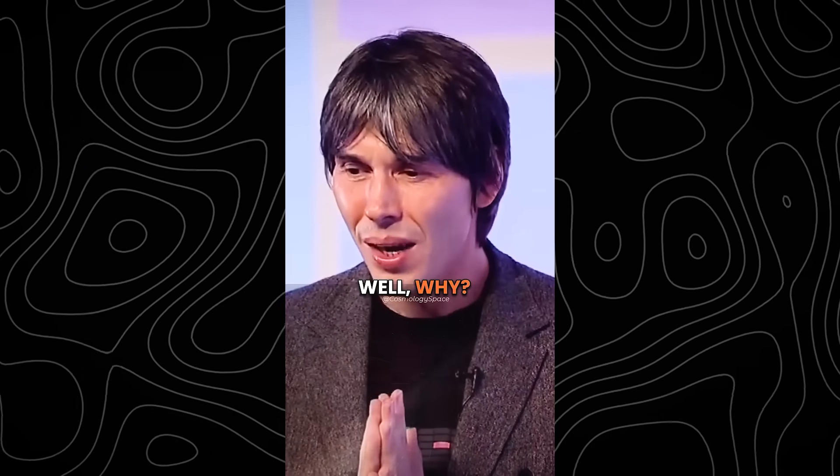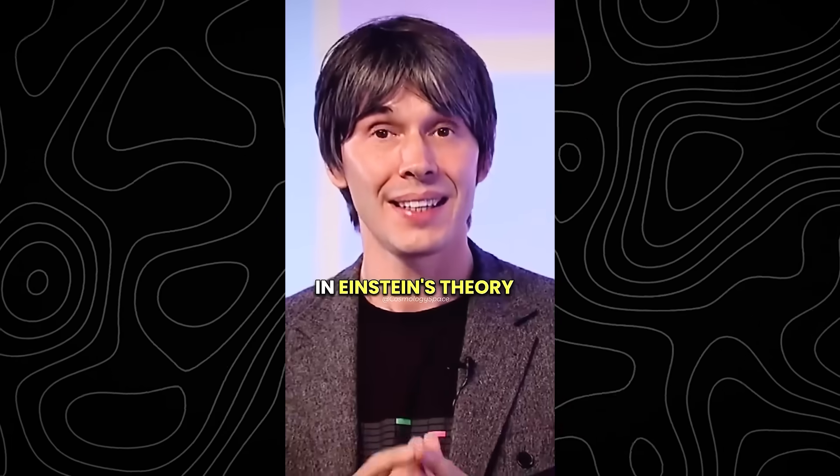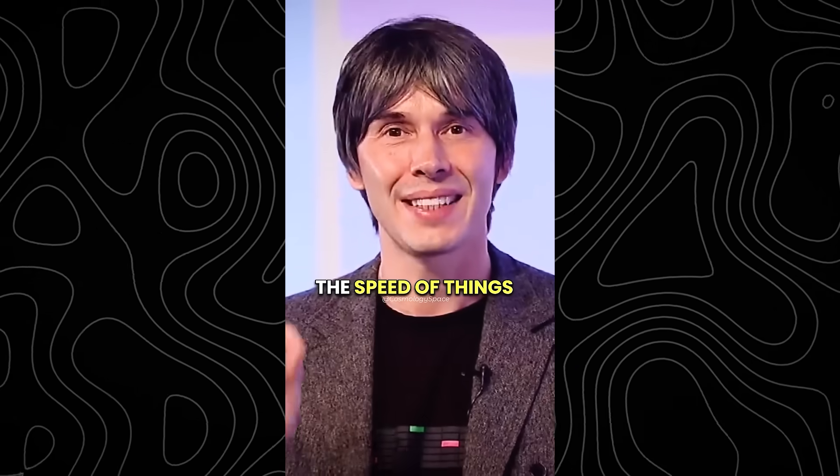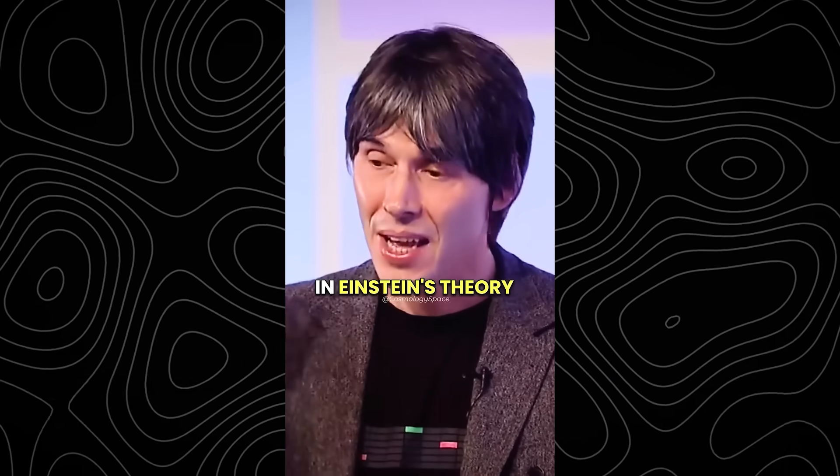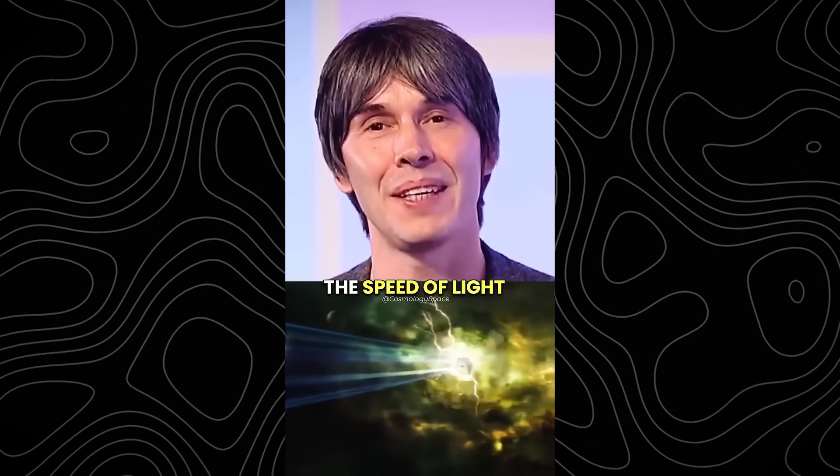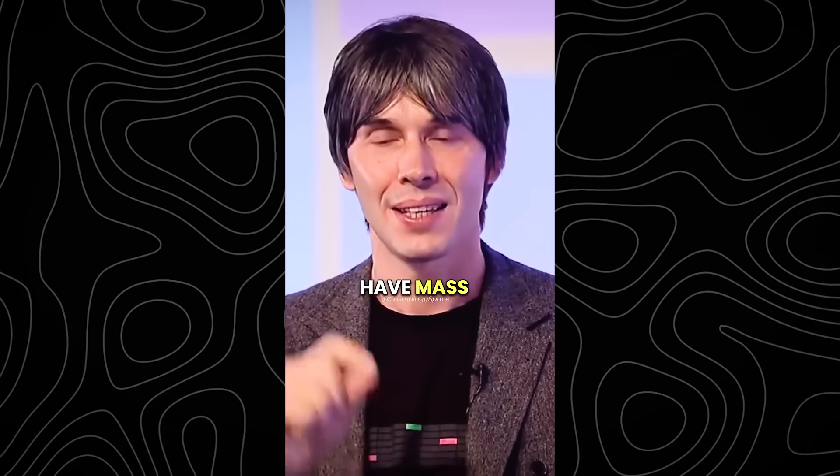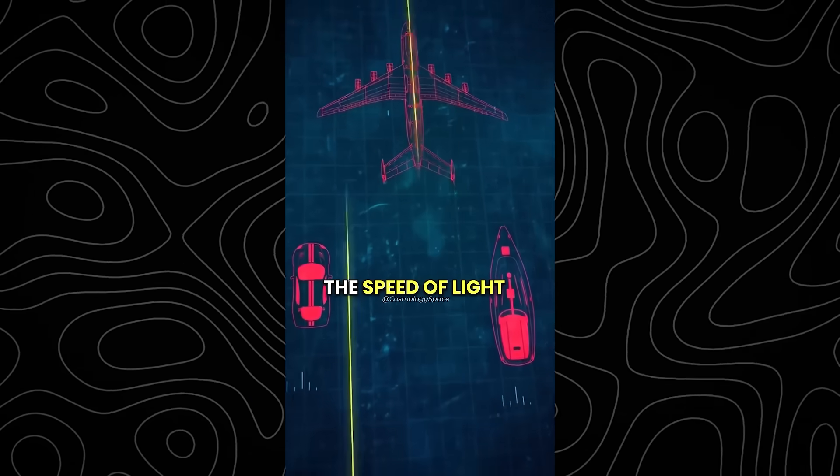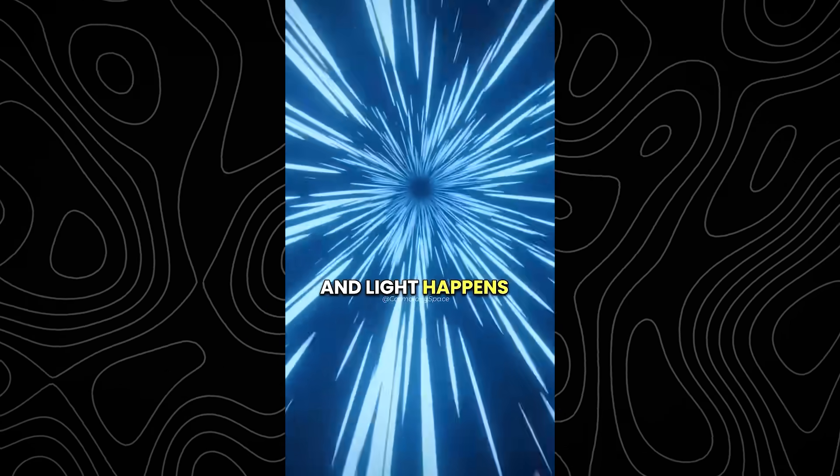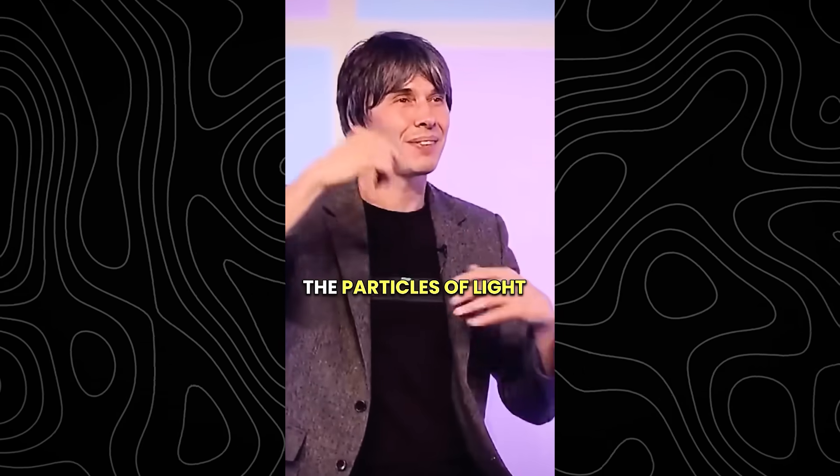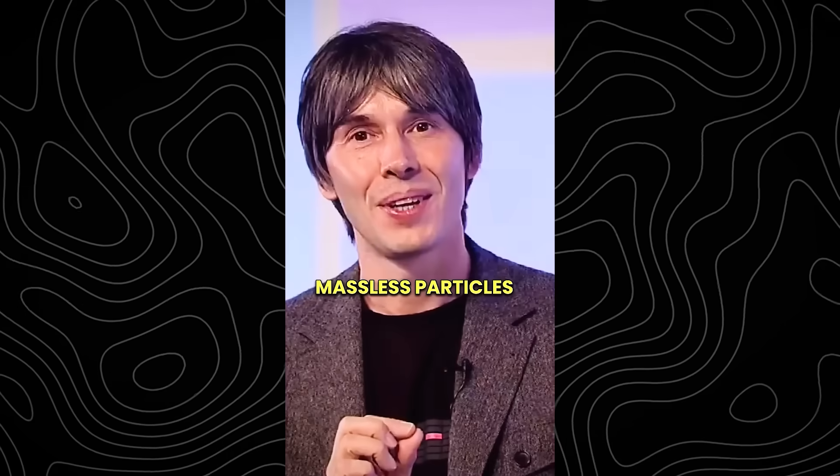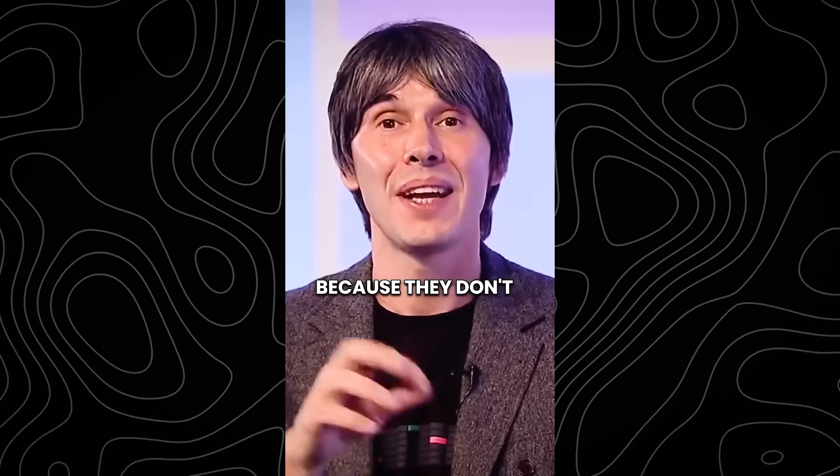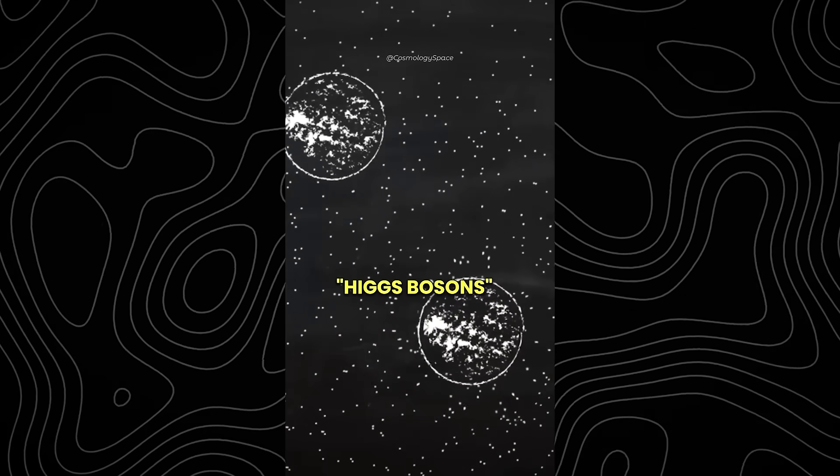People often ask me, why? What's special about light? In Einstein's theory, it's not really the speed of light. It's the speed of things that have no mass. So if you have no mass in Einstein's theory, you travel through space and time at the speed of light. And if you have mass, you travel slower than the speed of light. And light happens to be massless. So the photons, the particles of light that are streaming around in the room now, those things are massless particles. Why are they massless? Because they don't interact with something called Higgs bosons.